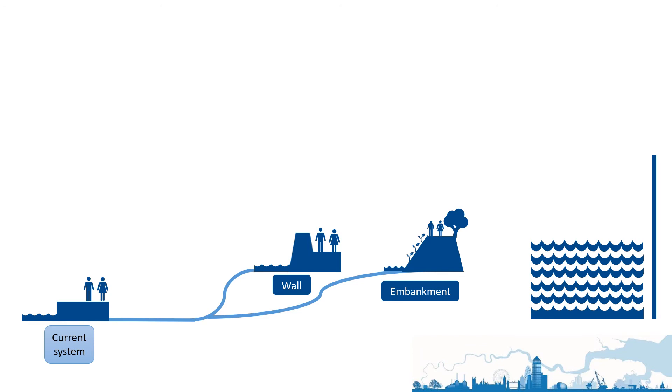One route is the sequence of actions that would be involved in building the flood wall. The other is the course of action needed to create a flood embankment. You've weighed up the options and decided to take the route to building an embankment.